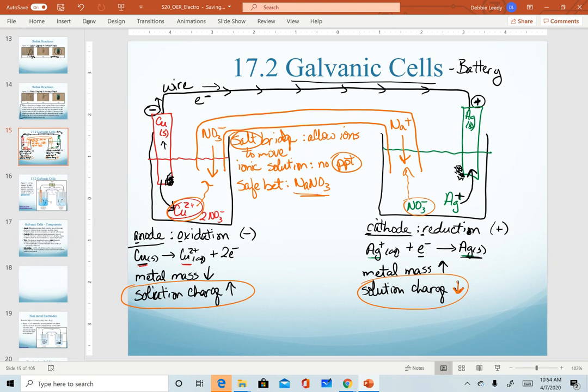So short version here. The anion in your salt bridge, SB, is for salt bridge. Anions travel to the anode. Your cations in your salt bridge, SB, travel to the cathode. I don't want you or expect you to memorize that, but that is a convenient way to remember which way they're going.